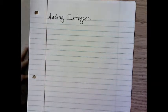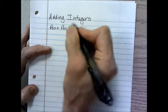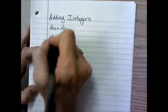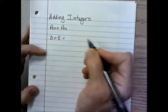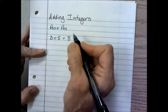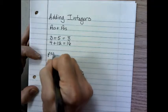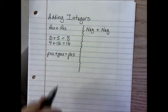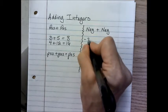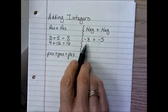Today we're going to talk about adding integers. If we look back, you'll notice that you have been adding positive numbers plus positive numbers for some time now. You know that 3 plus 5 equals 8, and 4 plus 12 equals 16. So a positive plus a positive is always going to equal a positive number — you've been doing this for a long time.